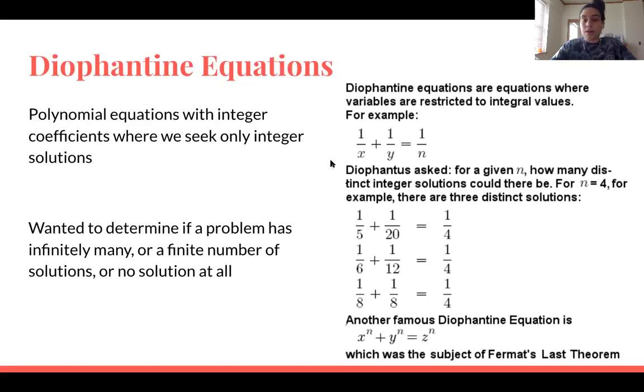At the top, he has an equation of 1 over x plus 1 over y equals 1 over n. And then below, it's stated that he would ask for a given n, how many distinct integer solutions could there be? So, for example, n equals 4. There are three distinct solutions, 1 over 5 plus 1 over 20, 1 over 6 plus 1 over 12, and 1 over 8 plus 1 over 8 all equal 1 over 4 for n equal 4. And then another famous Diophantine equation is also x to the n plus y to the n equals z to the n.